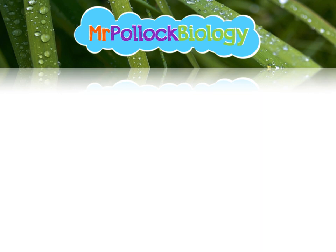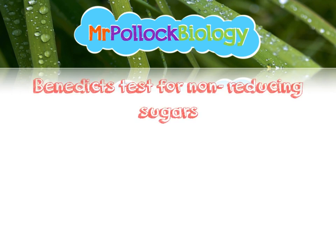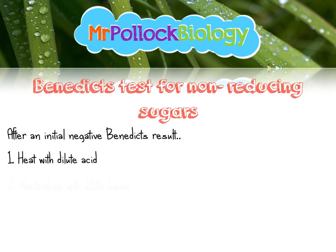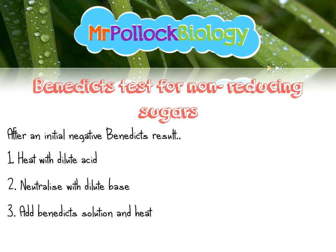There's another class of sugars called non-reducing sugars, and we can do a very similar test to identify whether a sample has a non-reducing sugar. We have to do the initial Benedict's test first and get a negative result. After the initial negative Benedict's test, we would heat the sample with dilute acid, neutralise with a dilute base, add Benedict's solution again and heat. Again, it's going to be that colour change from blue to brick red that will indicate the presence of a non-reducing sugar.